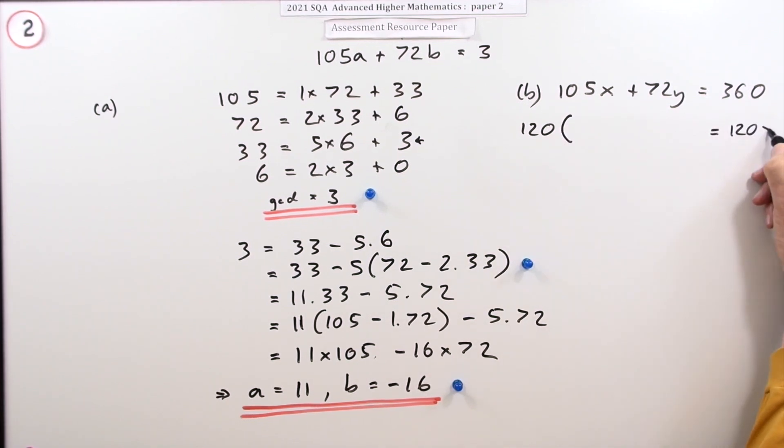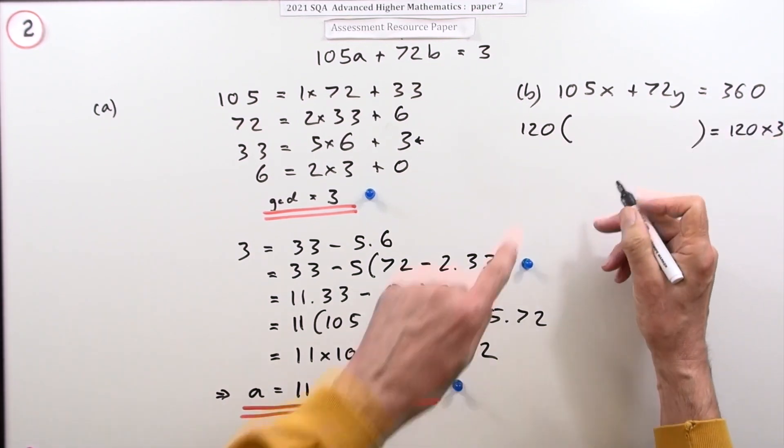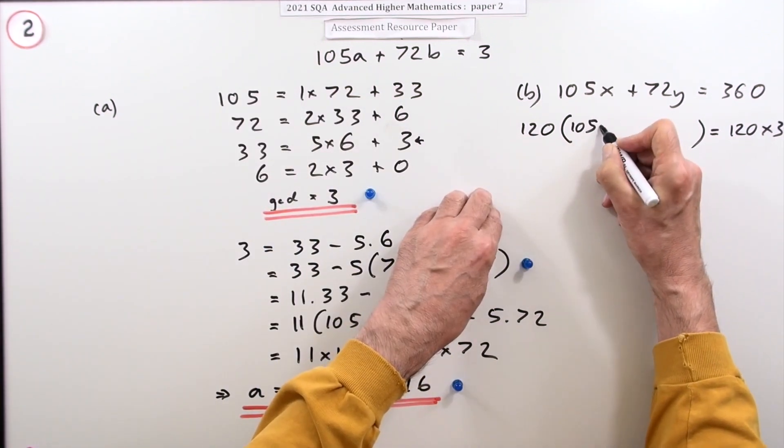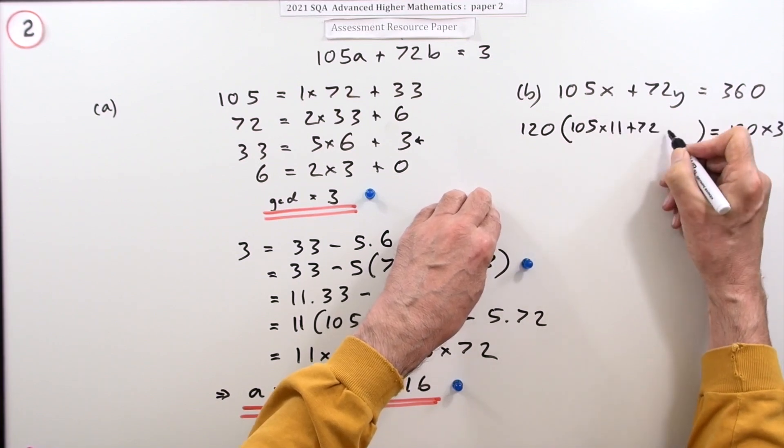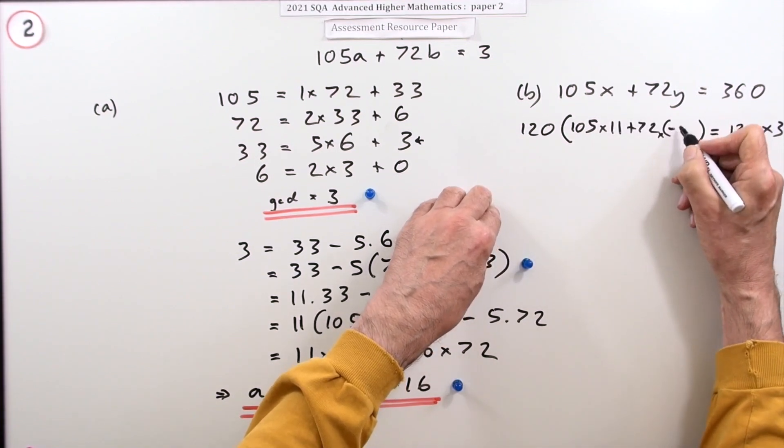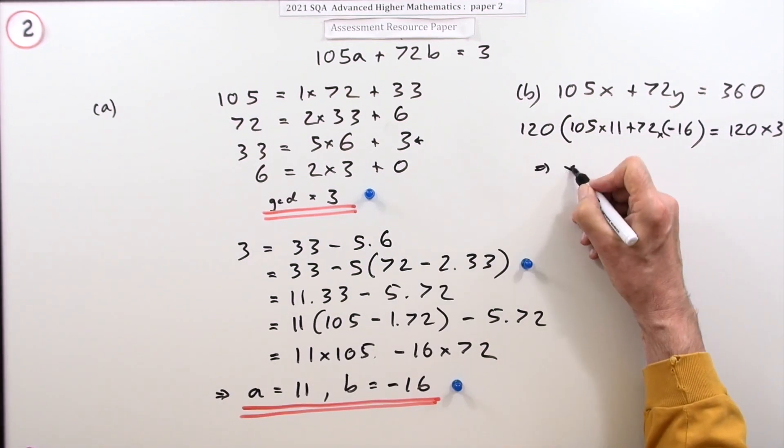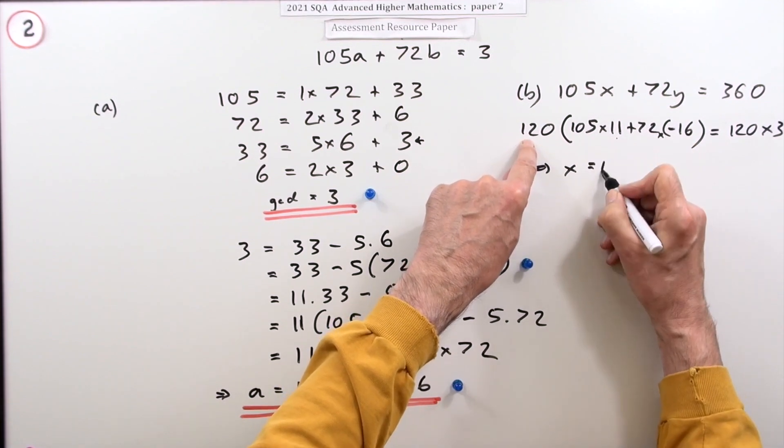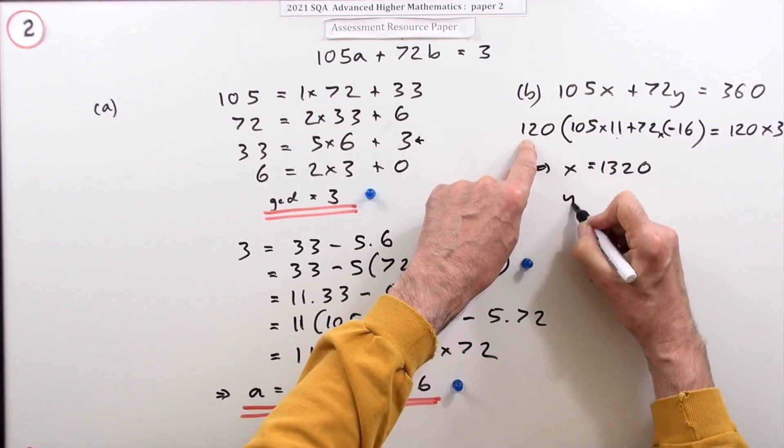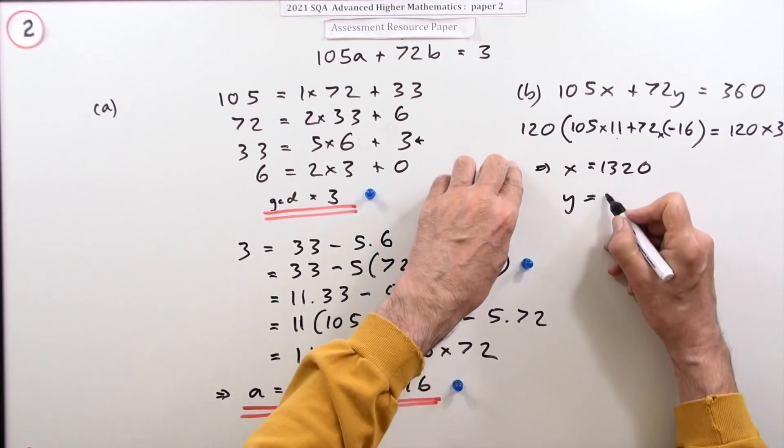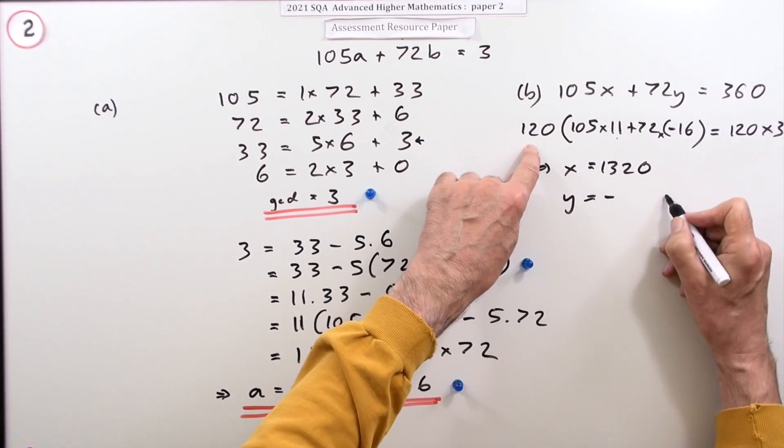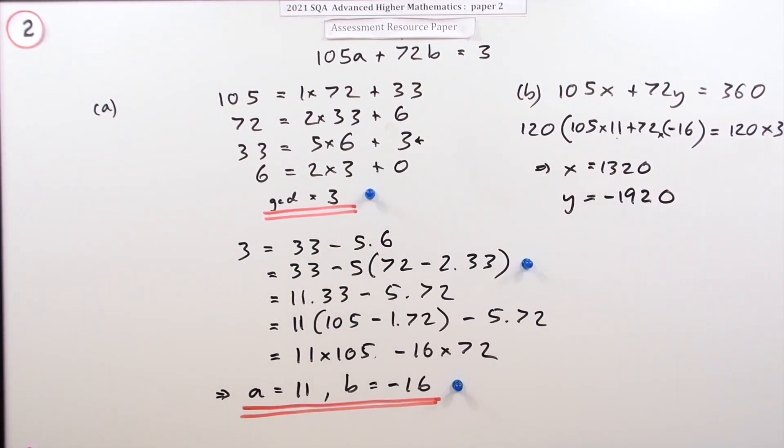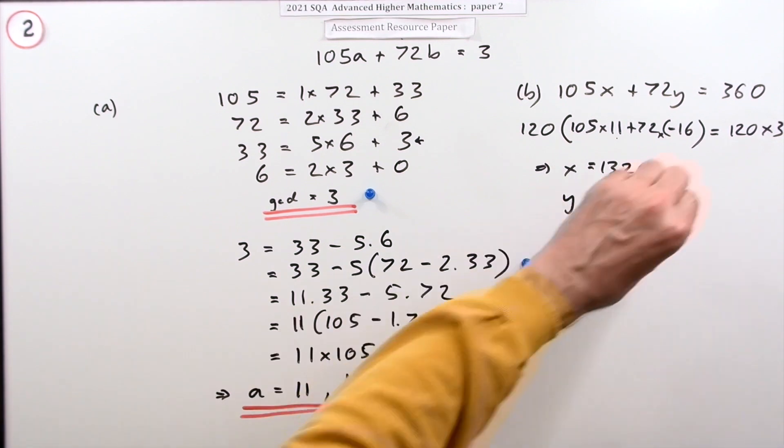If that equals 120 times 3, it must be 120 times the original equation. So 120 times 105 by 11 and 72 by negative 16. In which case, x must be 120 times 11, that's 1320. And y is 120 times negative 16, that's negative 1920. So there's the pair.